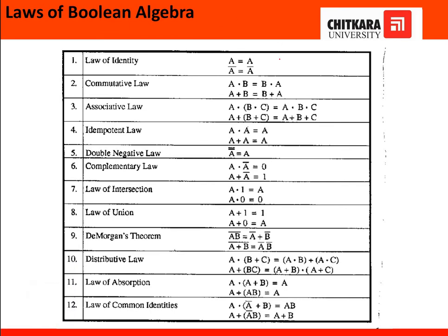The first one is the law of identity, which shows that a equals a and a-bar equals a-bar, which means we can write 0 equals 0 and 1 equals 1. There is no change in these values.